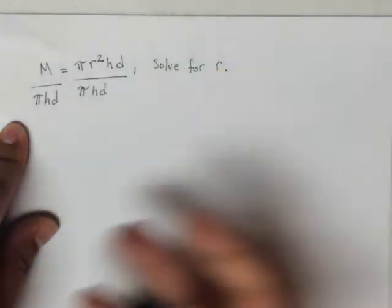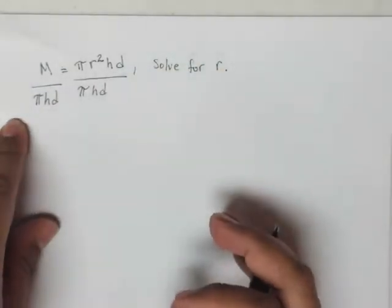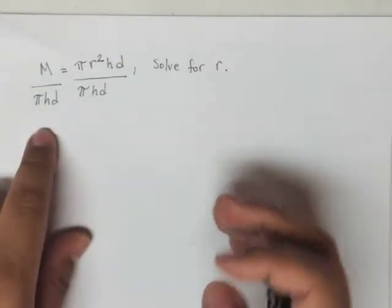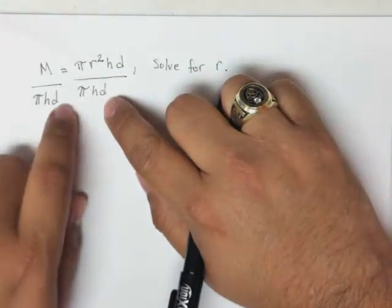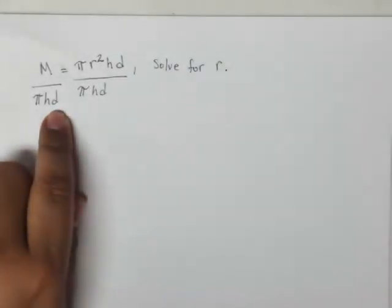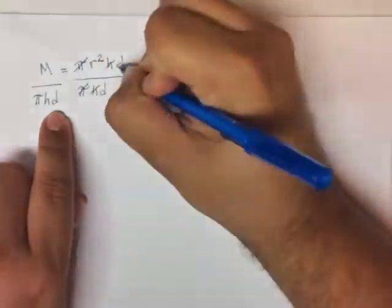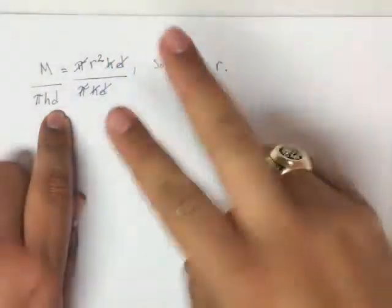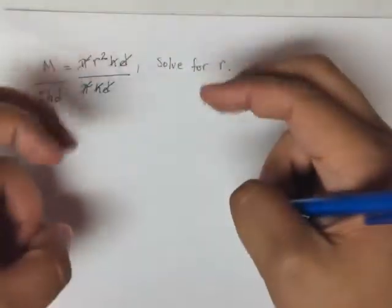And I guess all that means is pi is now in high definition. Well, that's just a joke. But let's see here. If I divide everything by πhd, then what happens here is these π's, these h's, and these d's end up eliminating or cancel, as some of you might say.